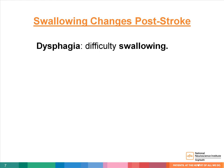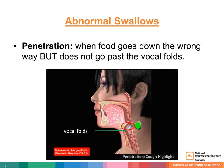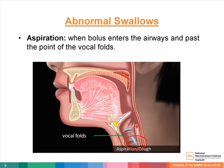Dysphagia is a medical term for having difficulties in swallowing. Some stroke patients might find eating, drinking, and taking medications difficult. Penetration is when food goes down the wrong way, meaning it enters the airways but does not go past the vocal folds. As you can see in this picture, the bolus sits on top of the vocal folds. Aspiration is the term we use when food goes past the point of the vocal folds — the bolus is now below the line of the vocal folds.